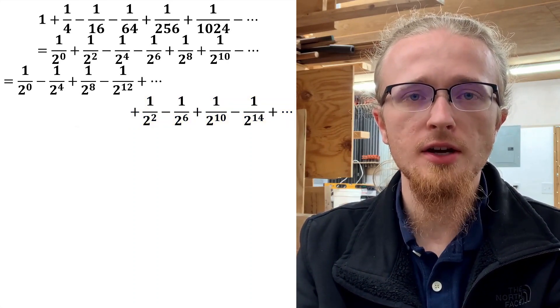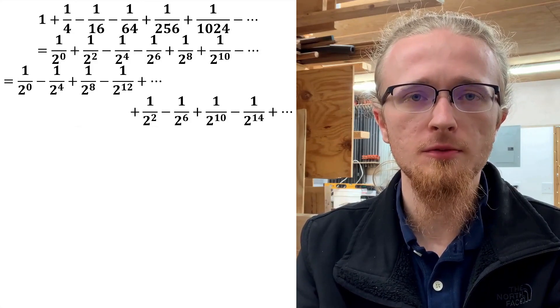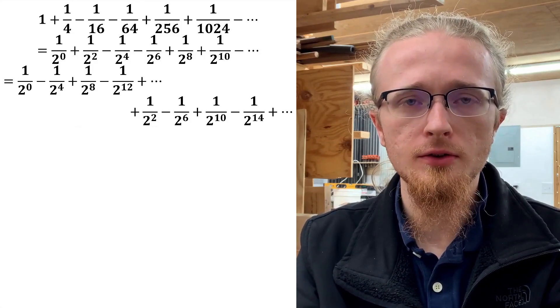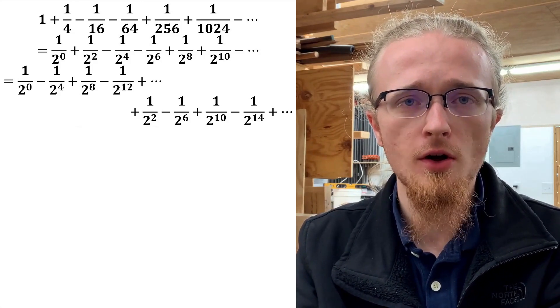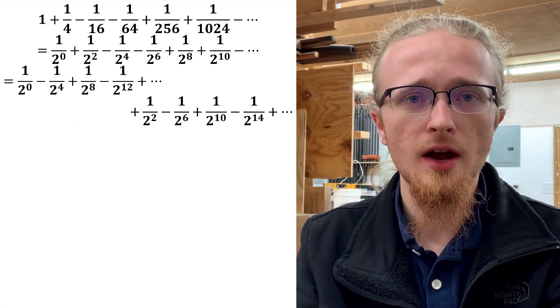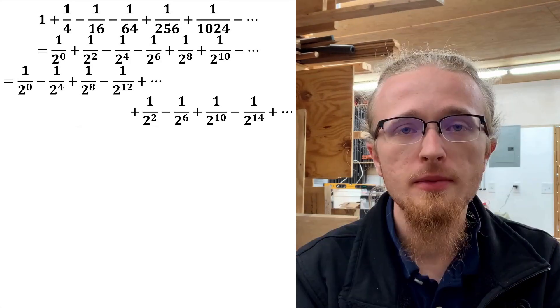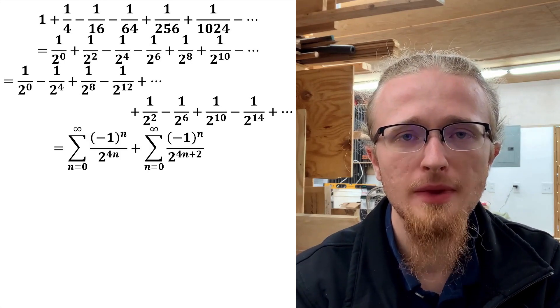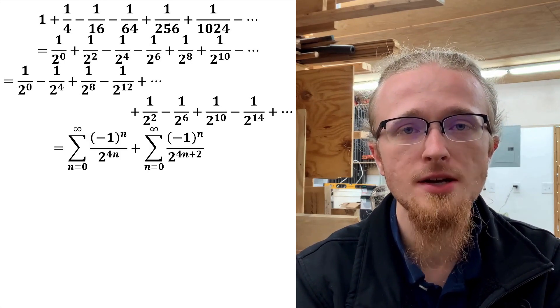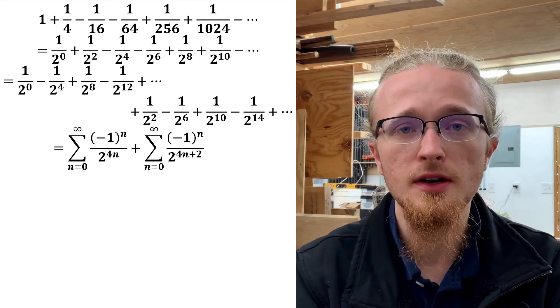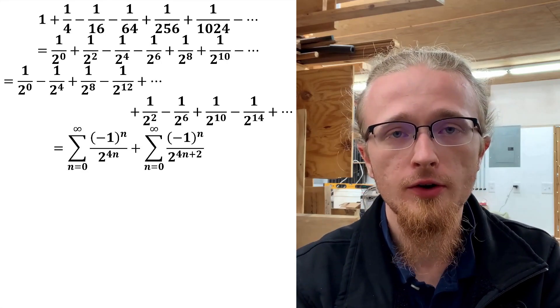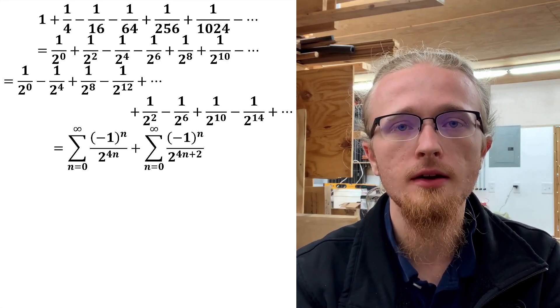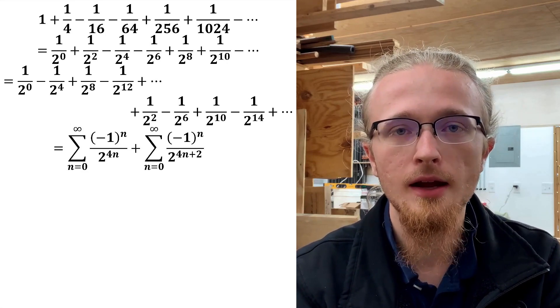This solves that weird sign-changing problem we were having, because it splits the overall series into two other series where the sign just alternates. And an alternating sign is something we do know how to handle. Because of that, we can easily write both of the two series we've broken the main series into in summation notation, like you see on the screen, where the now just alternating sign is handled by writing negative 1 to the n as usual.